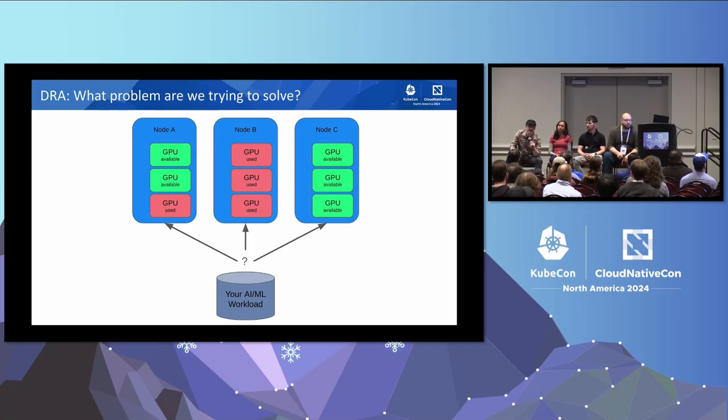I wanted to start by setting the stage with what's required on the AI ML side, because it's driving what's happening with networking today and this evolution. The diagram here asks: which problem are we trying to solve? DRA is Dynamic Resource Allocation. Essentially, the issue being addressed is what happens if you have workloads with a dependency on an exhaustible hardware resource — in the AI ML world, pods that might need to use a GPU.